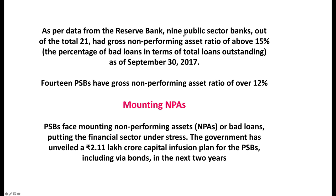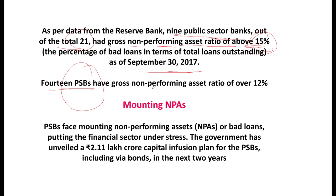Nine public sector banks out of 21 had a gross non-performing asset ratio of above 15% as of September 30, 2017, and 14 public sector banks had a gross NPA ratio of over 12%. This shows the mounting NPA problem. The government tried to recapitalize these banks with a 2.11 lakh crore capital infusion plan announced over the next two years.